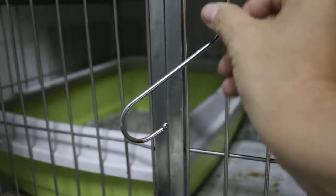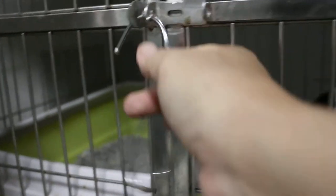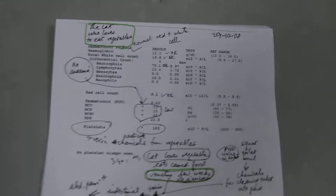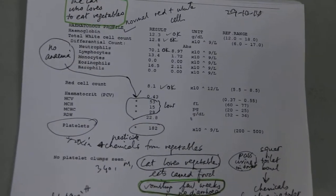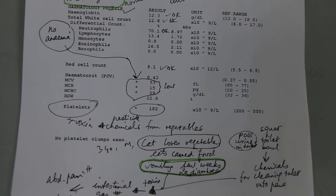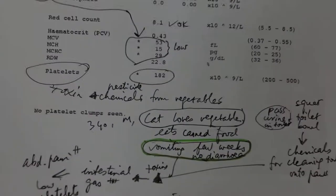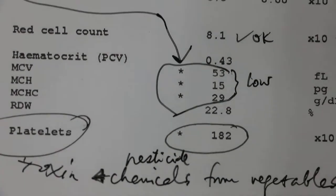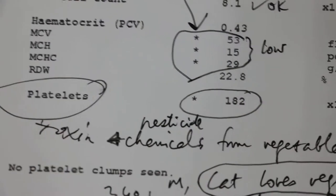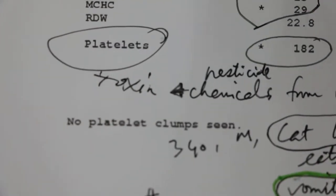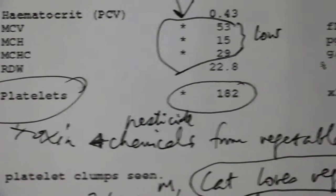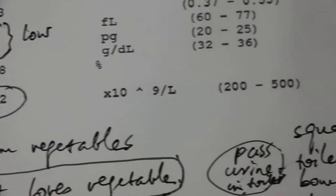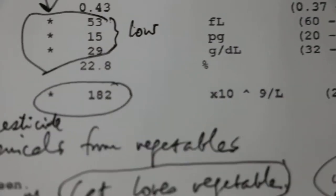Based on the blood test results, you can see that overall the red cells and white cells are normal, but there is low MCV, MCH, and MCHC. Now the platelets are low. The platelets should be 200 to 500, but it's 182.